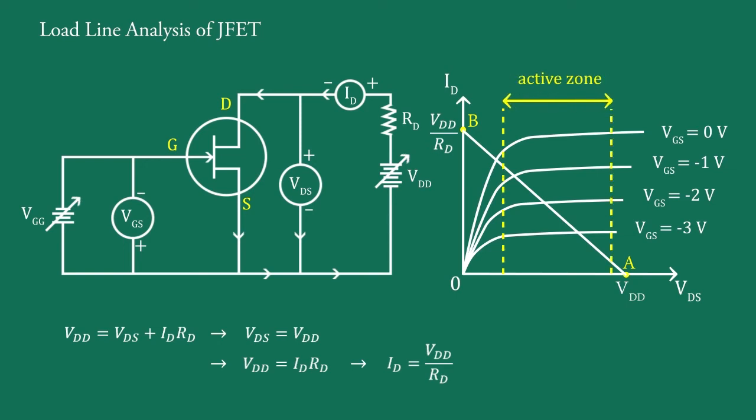During operation of a JFET as an amplifier, operating point should be chosen somewhere well within the active zone of the characteristics. But when it is determined by DC load line analysis, it would be the most optimized position of the Q point.